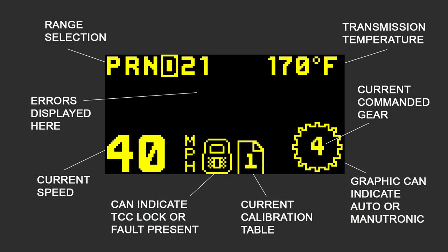Now let's take a look at the home screen. It shows real-time transmission information such as speed, current commanded gear, transmission temperature, selected calibration table, TCC lock, Prendel position, and any active faults. The calibration table icon is omitted on the Quick 2 since it only has one table.